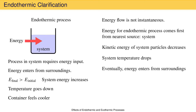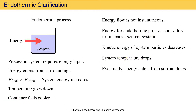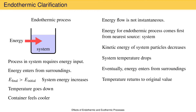In thinking about this, you need to distinguish what is observed in the short term from what is observed in the long term. When an endothermic process takes place, energy is required for the process to take place, and in the short term, that energy will come from the system, causing the temperature of the system to decrease and the container to feel cooler. In the long term, all that energy will be replaced as it flows in from the surroundings. In the long term, the system temperature will return to its initial value, and the system energy will then be greater than it was before. It is important to remember to distinguish short-term observations from the long-term outcome.